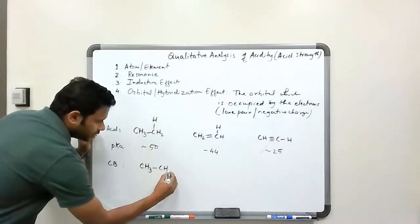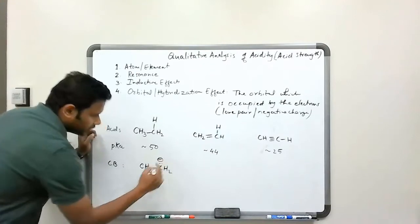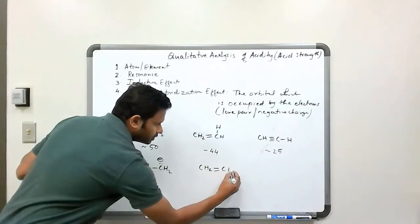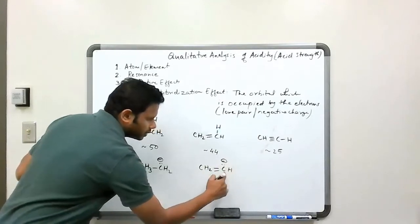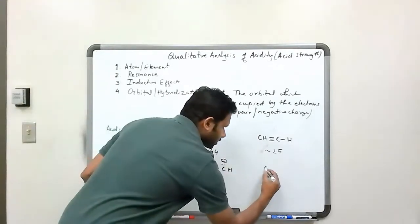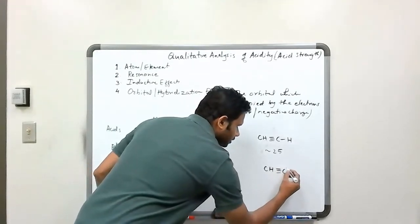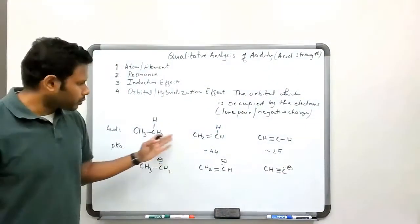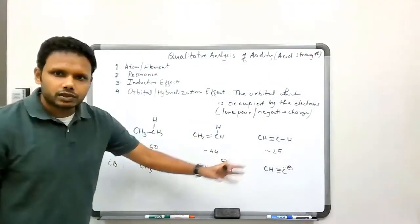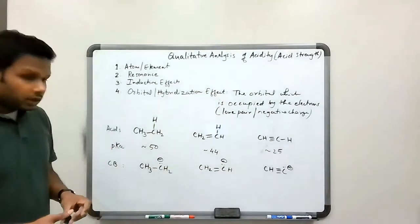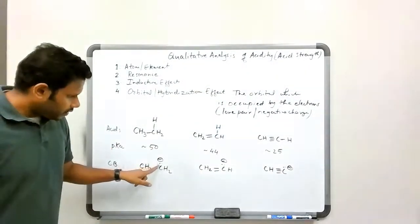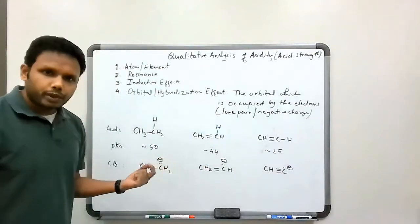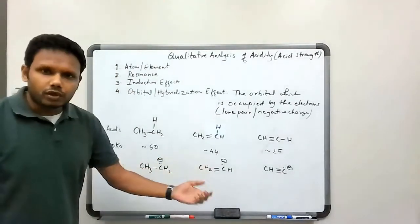If I draw the conjugate base for each one of these, we're going to get CH2 with a negative charge on that carbon. We get CH2 double bond CH with a negative charge on that carbon, and then we have CH triple bond C with a negative charge on that carbon. So I removed a proton from each of these molecules, assuming that it's an acid.